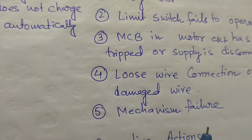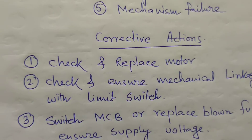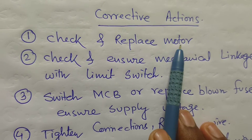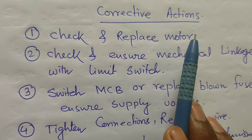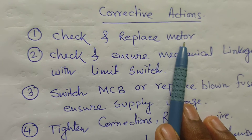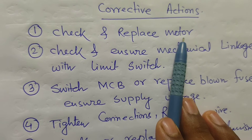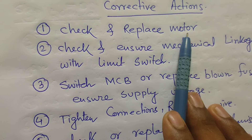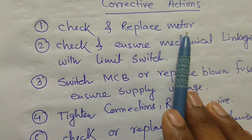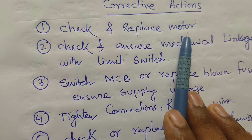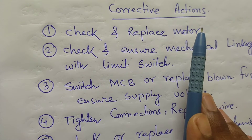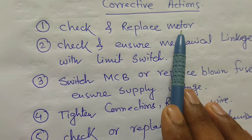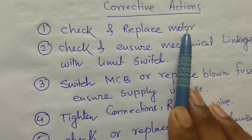Corrective actions to overcome these problems: check or replace the motor if there is any problem with the spring charging motor. A spare motor should be kept in emergency stock. I have experience changing motors in ABB circuit breakers, CGL circuit breakers, Siemens circuit breakers, Schneider, and PCOV 36 — I have already changed motors in my experience.